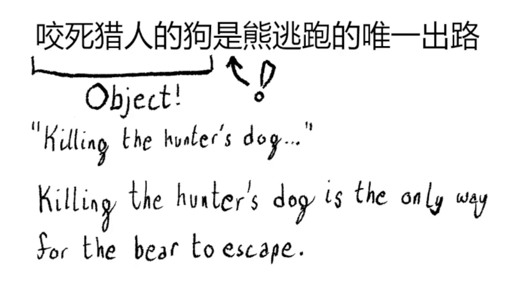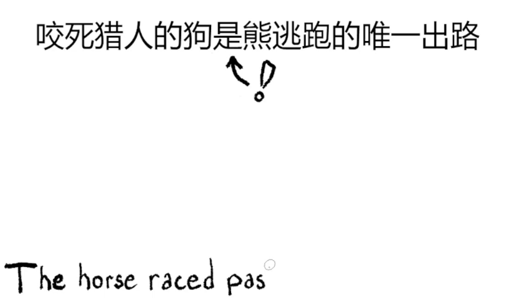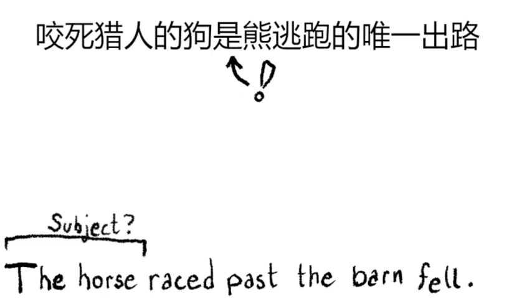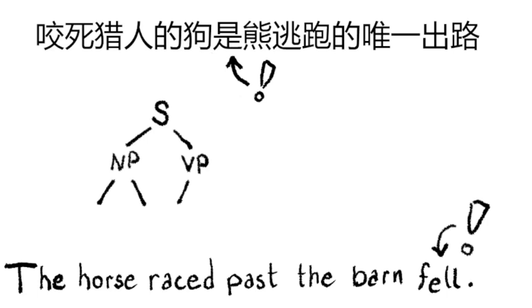And here is an example of a garden path sentence in English. The horse raced past the barn fell. At first, we think that the subject is the horse, but it is in fact the horse that was raced past the barn. As the reader goes through the sentence, they build a syntax tree that represents its structure. But then, when they encounter a key word,